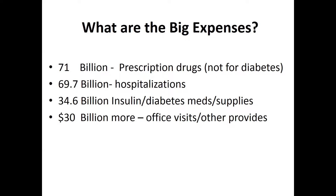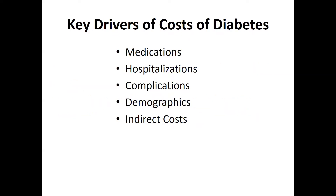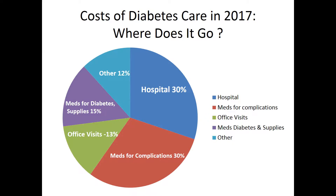The big cost drivers are $71 billion for prescription drugs not directly for diabetes, $70 billion for hospitalizations, $34 billion for insulin, diabetes medicines and supplies, and $30 billion for office visits and other providers. Key drivers turn out to be medications, hospitalizations, complications driving those hospitalizations, various demographic issues, and indirect costs. Hospitalizations and medications for complications use up much of the cost.